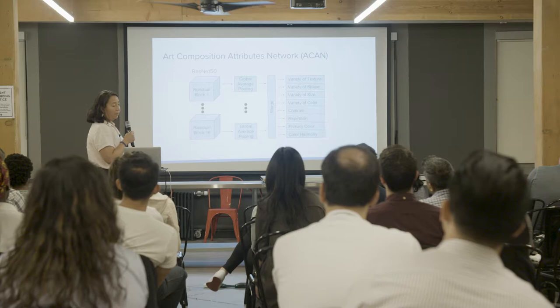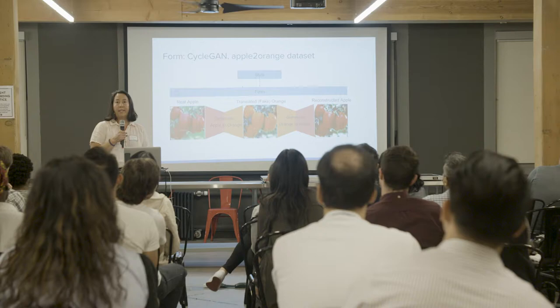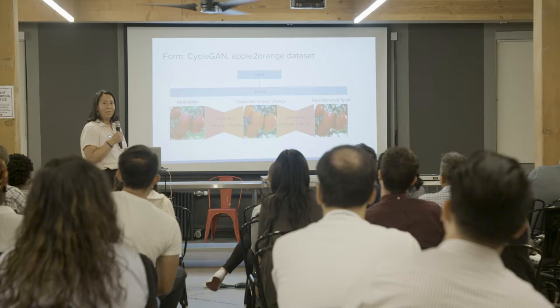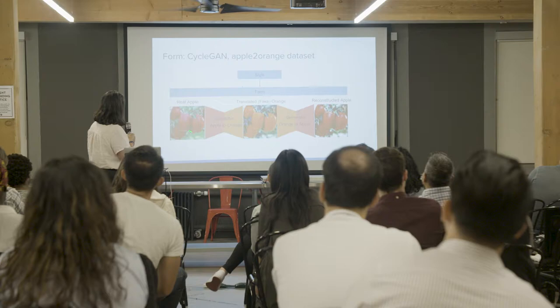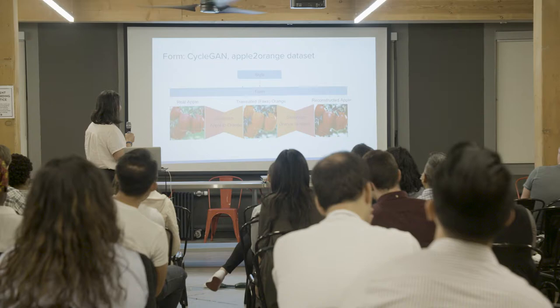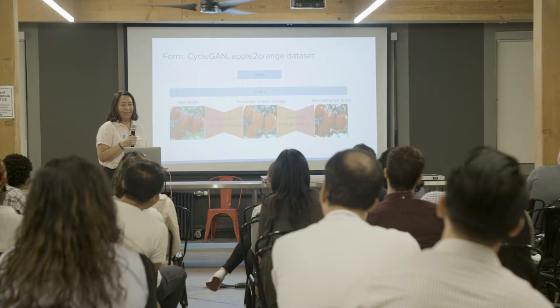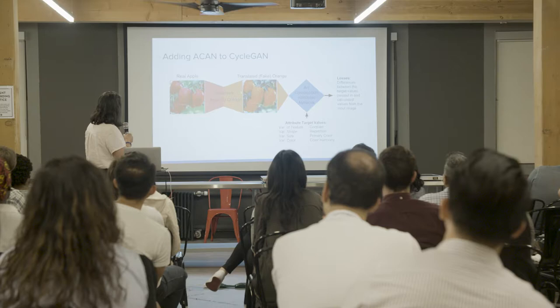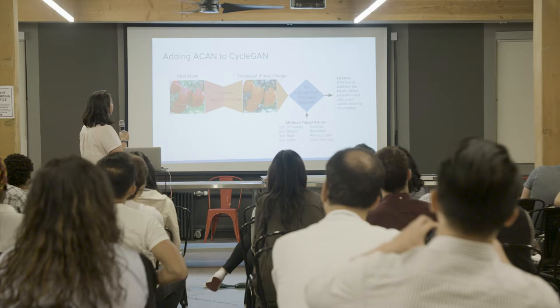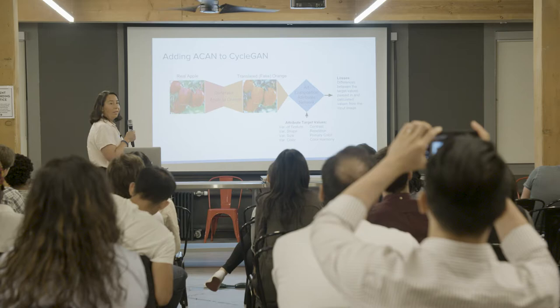Recalling from my previous diagram, the line on the left was the form. For my tests, I used the CycleGAN apple-to-orange dataset, where an orange is translated — a fake orange is generated from the apple and then reconstructed back. In addition to the classic CycleGAN losses, I passed this translated orange into my ACAN network along with some target attribute values, and then came up with some losses based on that.